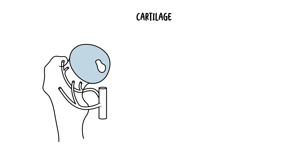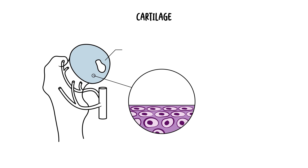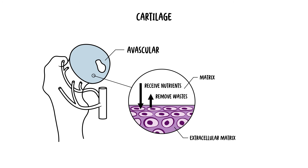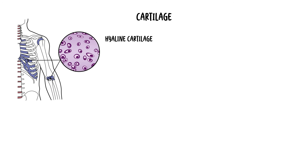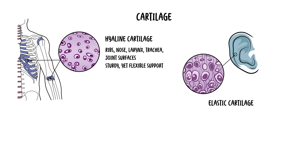Then you have cartilage, which is also a connective tissue. Unlike other connective tissues, cartilage is avascular, meaning it lacks blood supply, and relies on diffusion through the matrix to receive nutrients and remove wastes. This, combined with its unique extracellular matrix rich in water and specialized fibers, allows cartilage to absorb shock and reduce friction in joints. Cartilage comes in three main types: hyaline cartilage, the most abundant, found in the ribs, nose, larynx, trachea, and covering bones at joint surfaces, providing sturdy yet flexible support. Elastic cartilage contains a high concentration of elastic fibers, giving it enhanced flexibility, found in structures that require bending like the ear and the epiglottis.